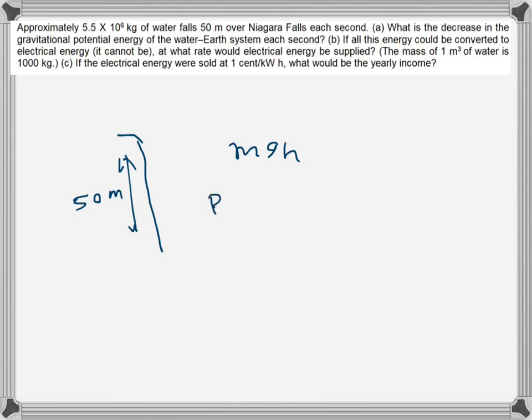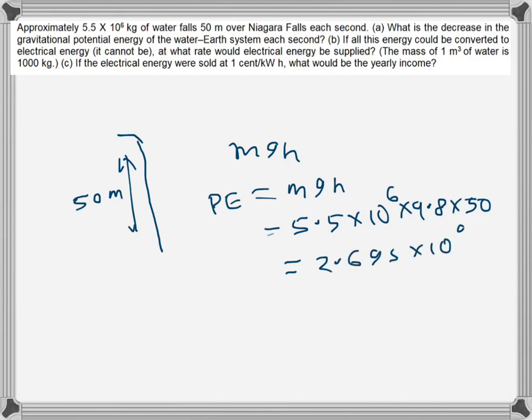So that's mgh, which is 5.5 × 10^6 kg times 9.8 times 50. When we do that, we get 2.695 × 10^9 joules. So that is the change in potential energy.